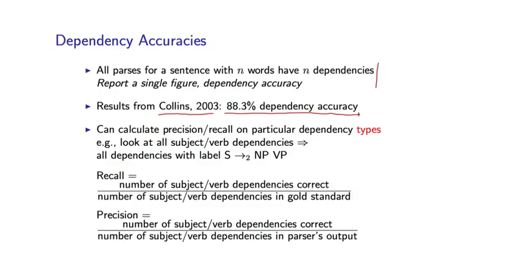So for example, I could look at all subject-verb dependencies. More precisely, I can look at all dependencies with this label. So whenever I see this label, I know that the dependency is involving a subject and a verb.